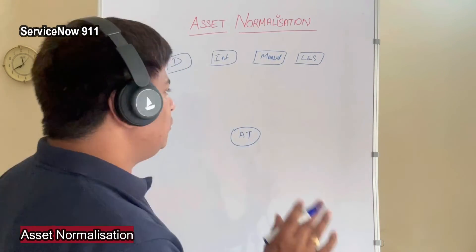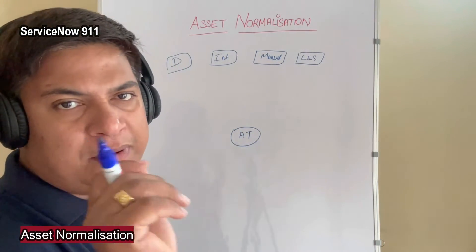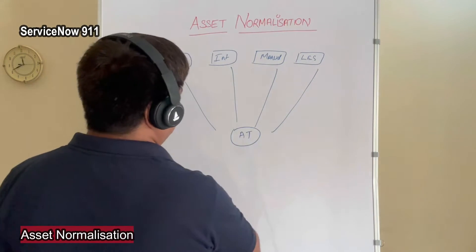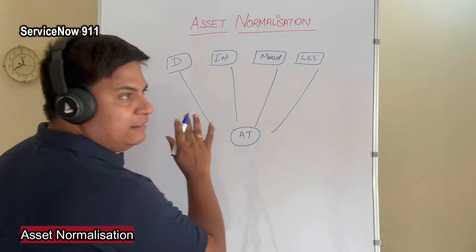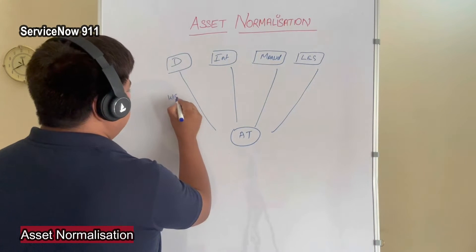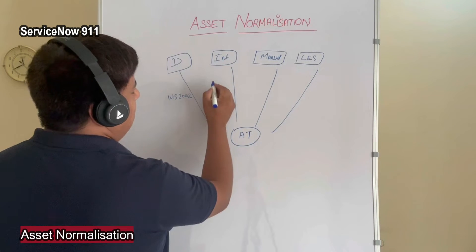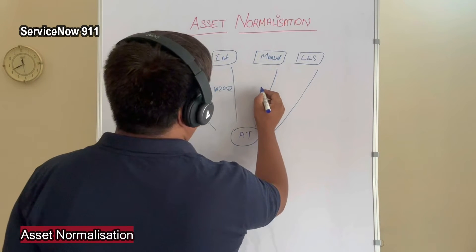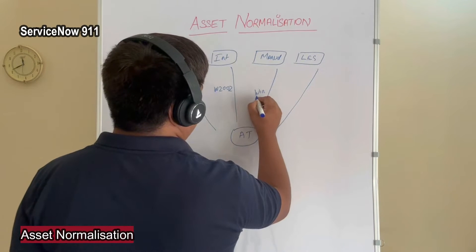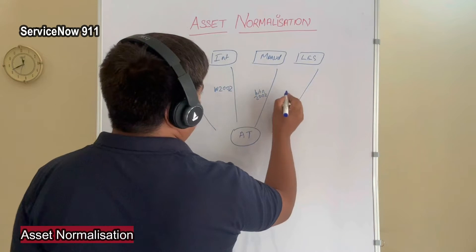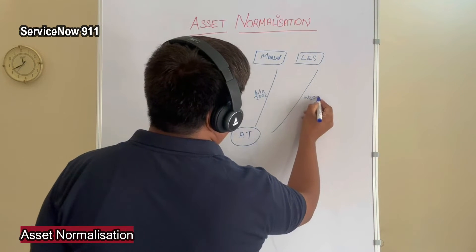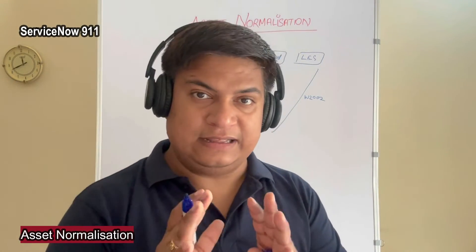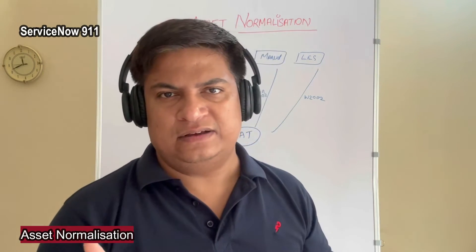Let's say the data of operating system is coming in. From discovery, the data is coming like 'ws2002', from integration 'w2002', manually 'win2002', and from another source 'w2002'. We know that the data is the same, but the way data is represented is different because it is coming from different systems.